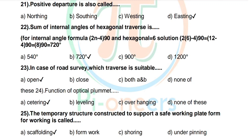Question 23: Which type of traverse is suitable for an open pertence — options: open, closed, both open and closed, none of these. Correct answer: open.